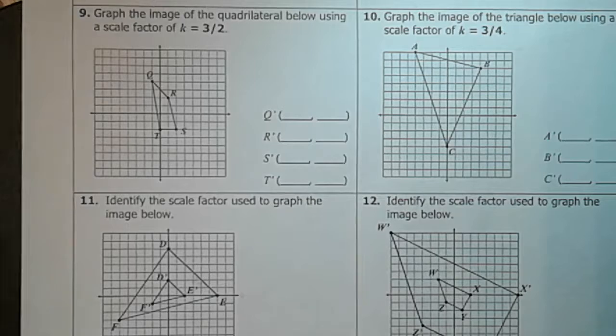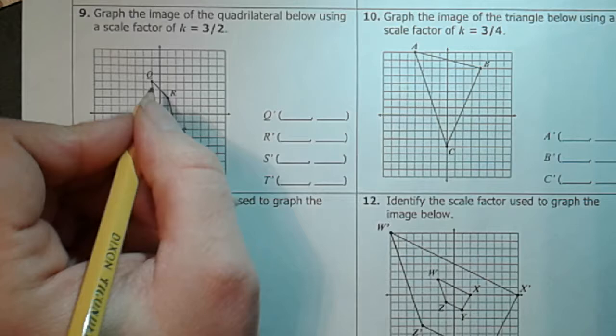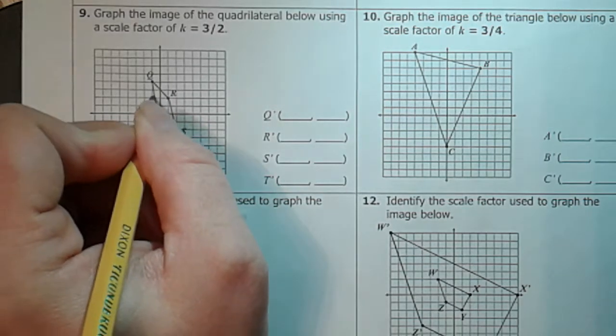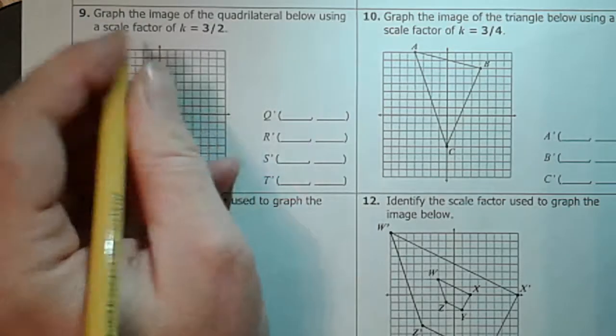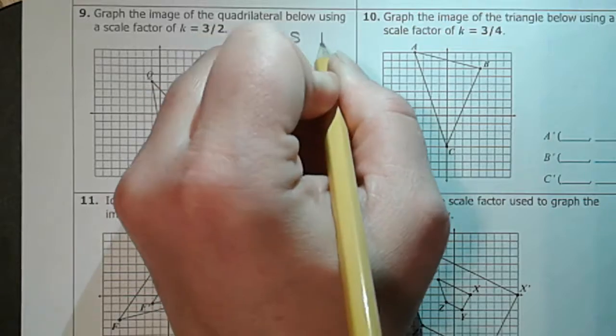So first we want to do is figure out what are the actual coordinates of our original figure. Well we look at Q is actually at negative one, one, two, three, four. So let's write this as a matrix right away. Q, R, S, T.